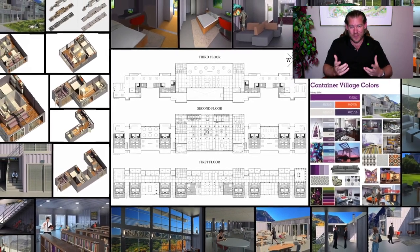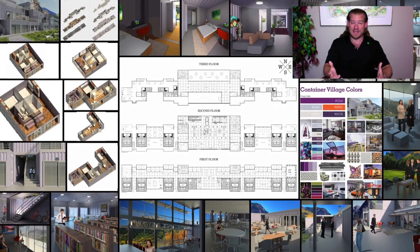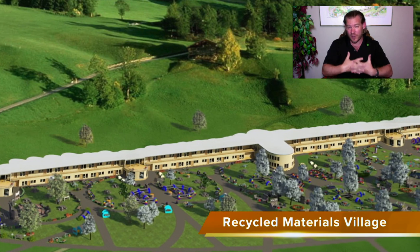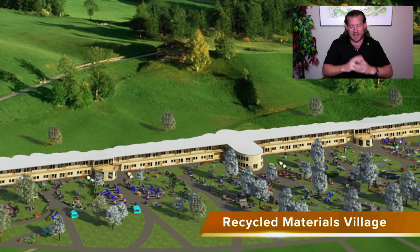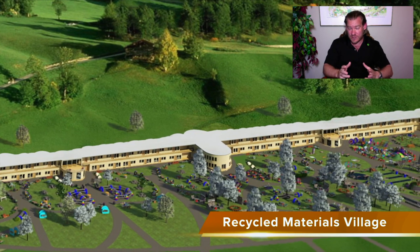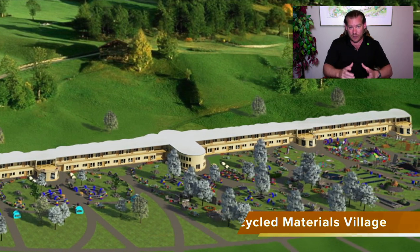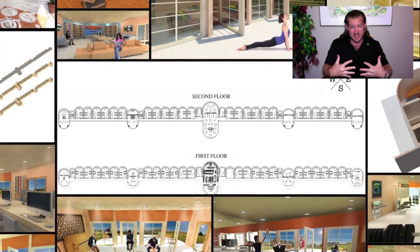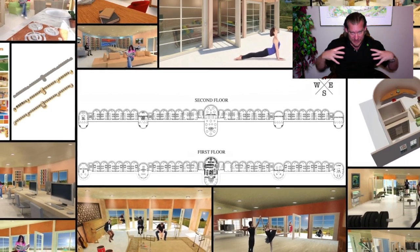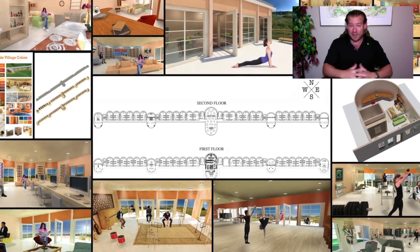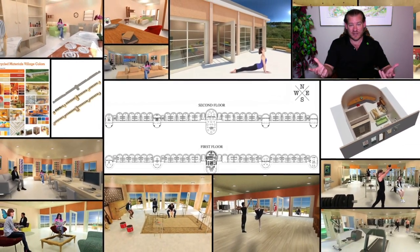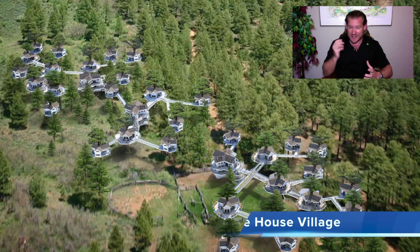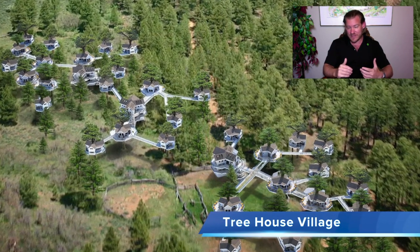A self-replicating open source ecovillage design model for everybody. This is what we're creating, and it can change the world if enough people become involved. Our whole process is to make it accessible, understandable, and achievable so that average people with average means can pool their resources, get together, and replicate what we're creating. We're building One Community as the first so that people can come and experience it — and to bring our global team, currently organizing and collaborating virtually, together in one place to exponentially improve our creative process.